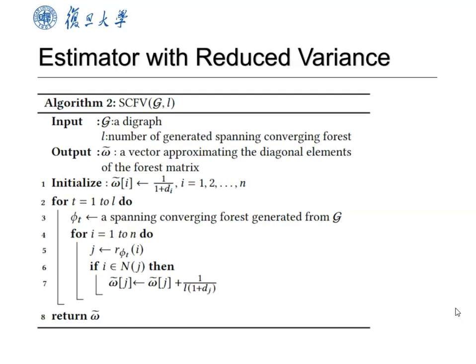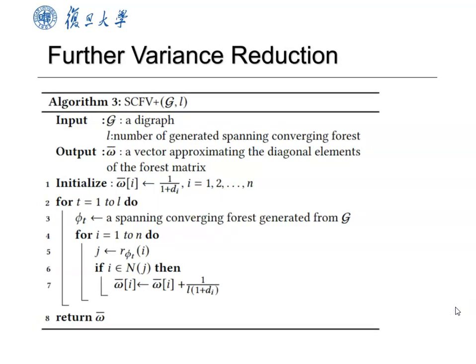The third algorithm, SCF plus, takes a novel approach by reversing the direction of information flow, resulting in the lowest variance among the three algorithms.